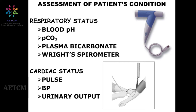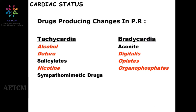Regarding cardiac status, the key parameter is heart rate — either tachycardia or bradycardia. Common drugs causing tachycardia include alcohol, datura, nicotine, salicylate, and sympathomimetics. Common drugs causing bradycardia include organophosphates, opiates, digitalis, and aconite.